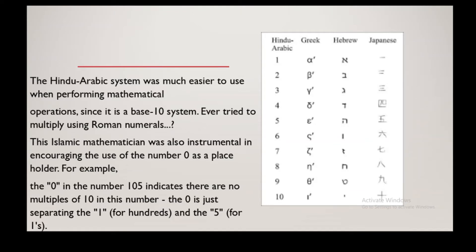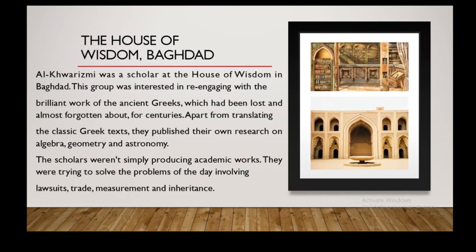This Islamic mathematician was also instrumental in encouraging the use of the number 0 as a placeholder. For example, the 0 in the number 105 indicates there are no multiples of 10 in this number — the 0 is just separating the 1 for hundreds and the 5 for ones.